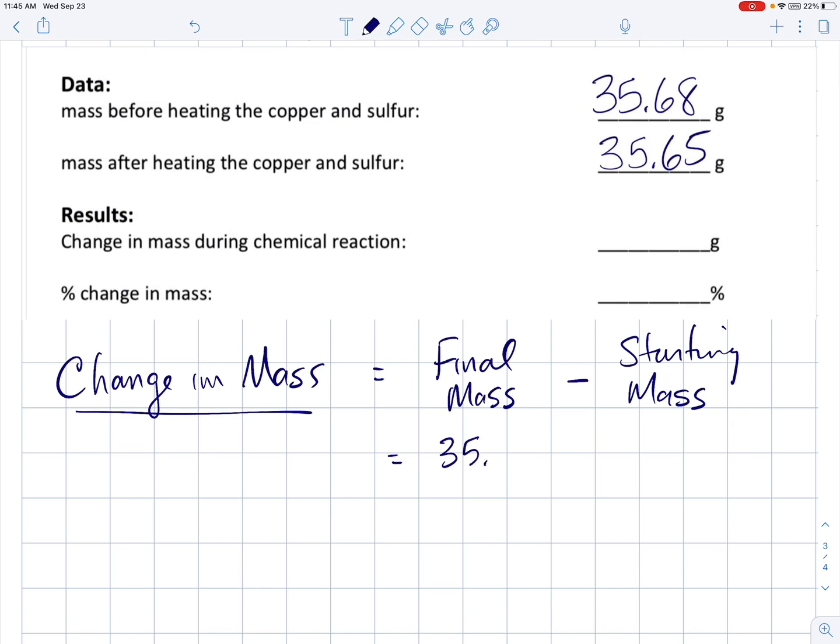So in this case we have 35.65 grams is my final mass, minus 35.68 grams which is my starting mass. When I subtract measurements, we know from our rules for significant digits, we base the answer on the number of decimal places. So since both of these numbers have two decimal places, we can keep two decimal places in the answer. We're going to get a negative answer, because the mass dropped. The second mass is bigger than the first mass in this formula, so I'm going to get a negative answer. So I get negative 0.03 grams.